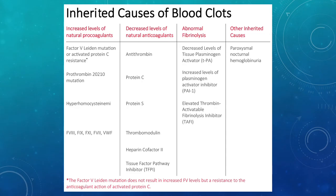Some inherited causes of blood clots include increased levels of natural procoagulants, decreased levels of natural anticoagulants like protein C or S deficiency or TFPI, abnormal fibrinolysis, and other inherited causes.